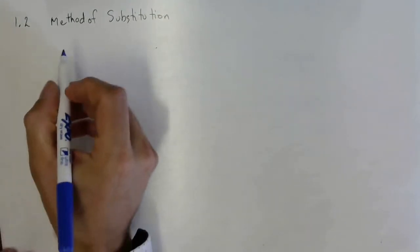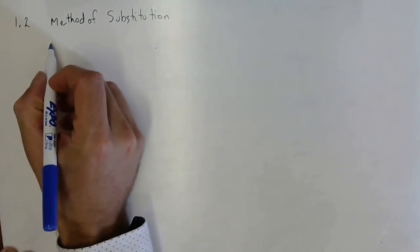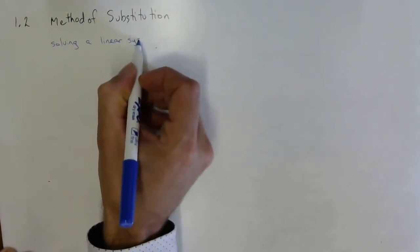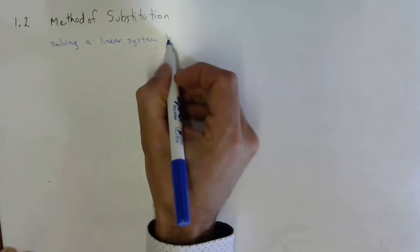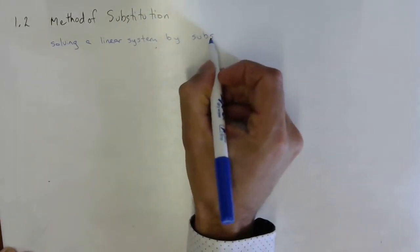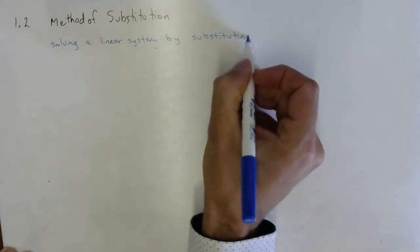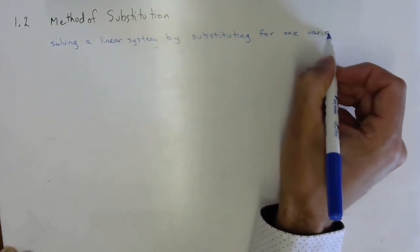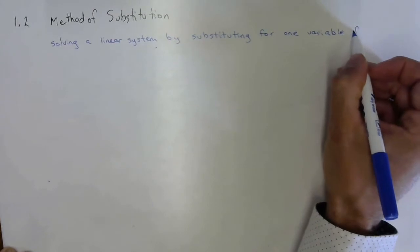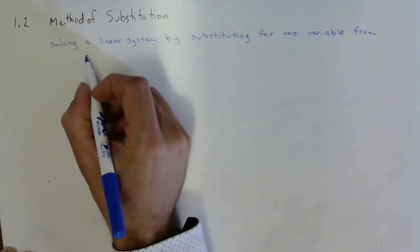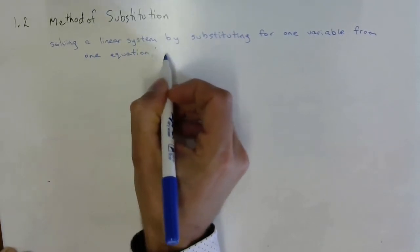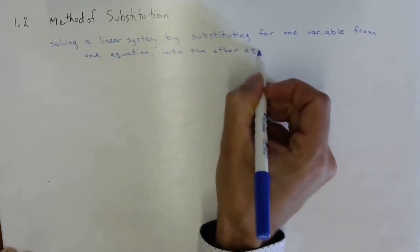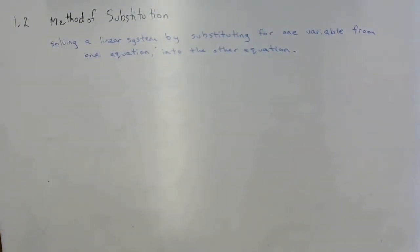So today we're going to learn a different way and it's called the method of substitution. You have a little bit of space for notes. This is solving a linear system by substituting for one variable from one equation into the other equation.